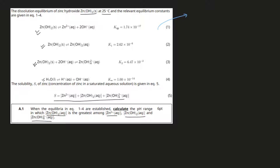Let's start with the first equilibrium. This is a sparingly soluble salt, so we have the Ksp here. For a sparingly soluble salt, the equilibrium constant is defined as the product of concentrations raised to the power of the stoichiometric coefficients. So we have [Zn²⁺][OH⁻]² — since the stoichiometric coefficient is 2 — and this is equal to 1.74 × 10⁻¹⁷.